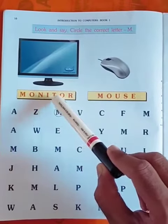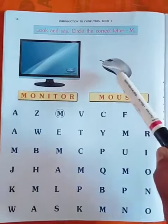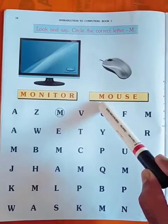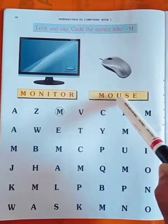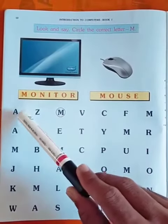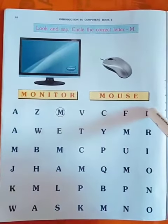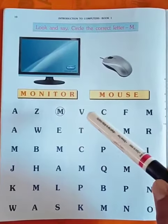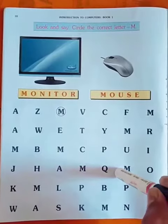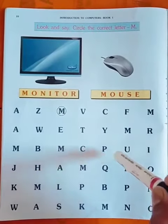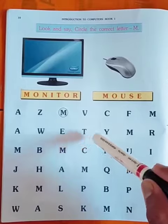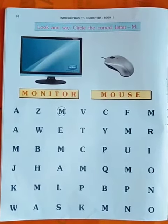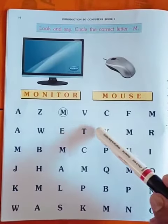Another gadget is mouse, the first letter of mouse is M — M O U S E. So in this exercise you have to find M and circle the letter M. You have to write this exercise in your notebook and in your book also.